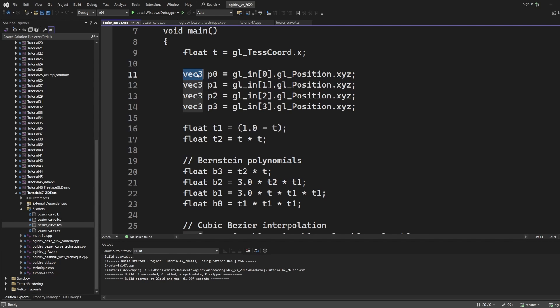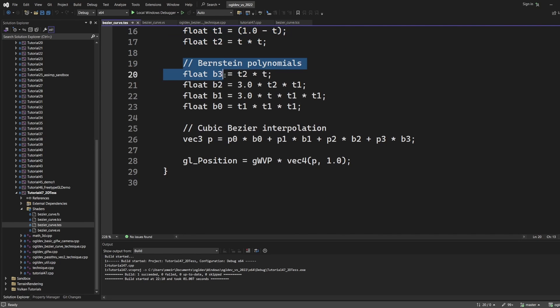We can now calculate the Bernstein polynomials for the current value of t and then multiply each polynomial by the corresponding control point. Sum up the products and we get the final interpolated point. This point of course is considered to be in its local space so we multiply it by the WVP matrix to transform it into world, view and finally clip space. We don't have a geometry shader here so this point goes directly into the rasterizer which will rasterize the line segments created by the tessellator.